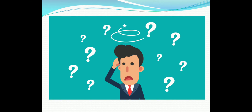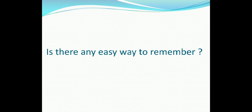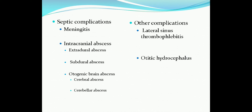Don't get confused — there is an easy way to remember this. Based on the 8th edition of Scott Brown's Otorhinolaryngology and Head and Neck Surgery, the reference book for postgraduate students, we can divide intracranial complications into septic complications and other complications. Meningitis and intracranial abscesses — extradural abscess, subdural abscess, and brain abscess — are called septic complications.